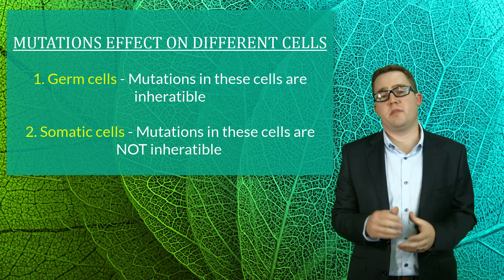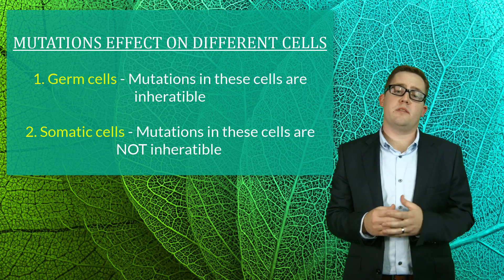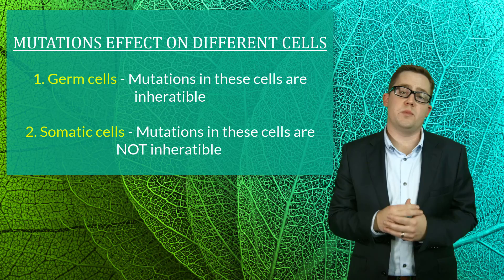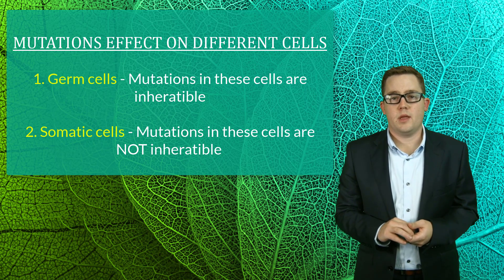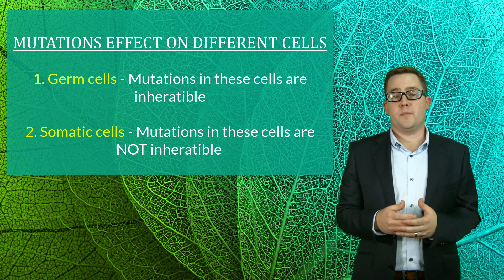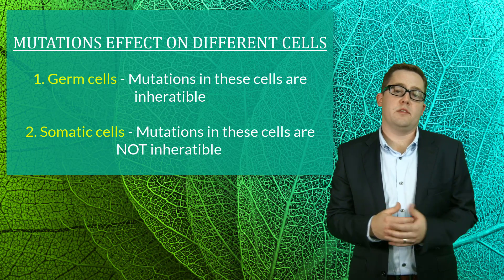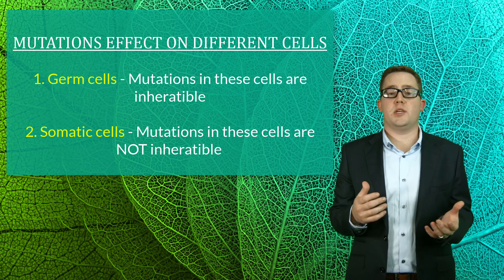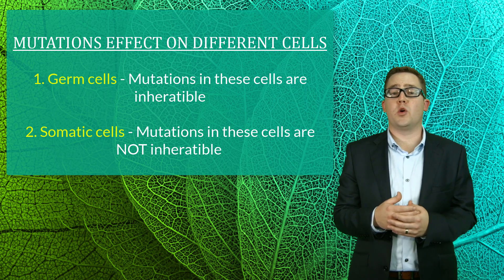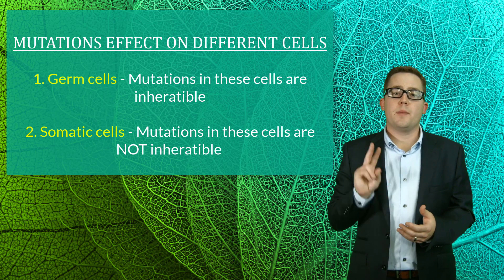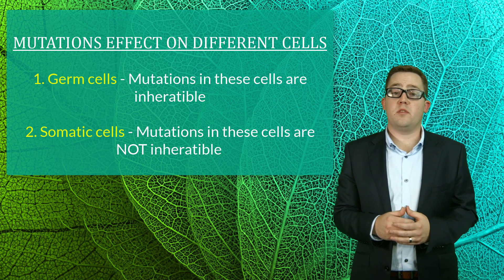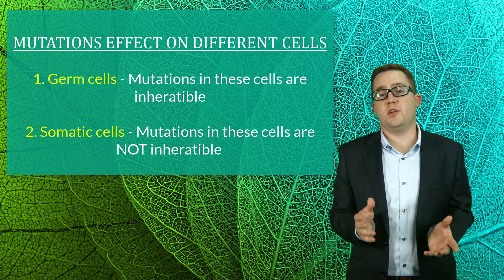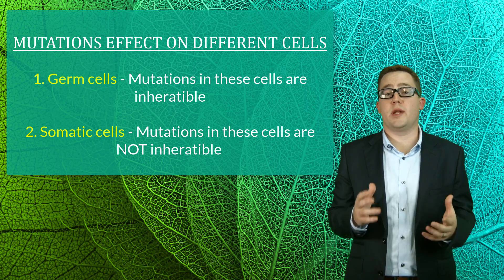The last thing we need to discuss is the effect that mutations can have on different types of cells. It is important to distinguish between two different types of cells in which mutations can occur. The first are called germ cells, which are cells used to make sperm and egg. Because mutations are present in the gametes, these mutations can be passed on to offspring and are what we call inheritable. The second are somatic, or body tissue, mutations. These mutations can cause serious disease but will not be passed on to future generations and are what we call non-inheritable.